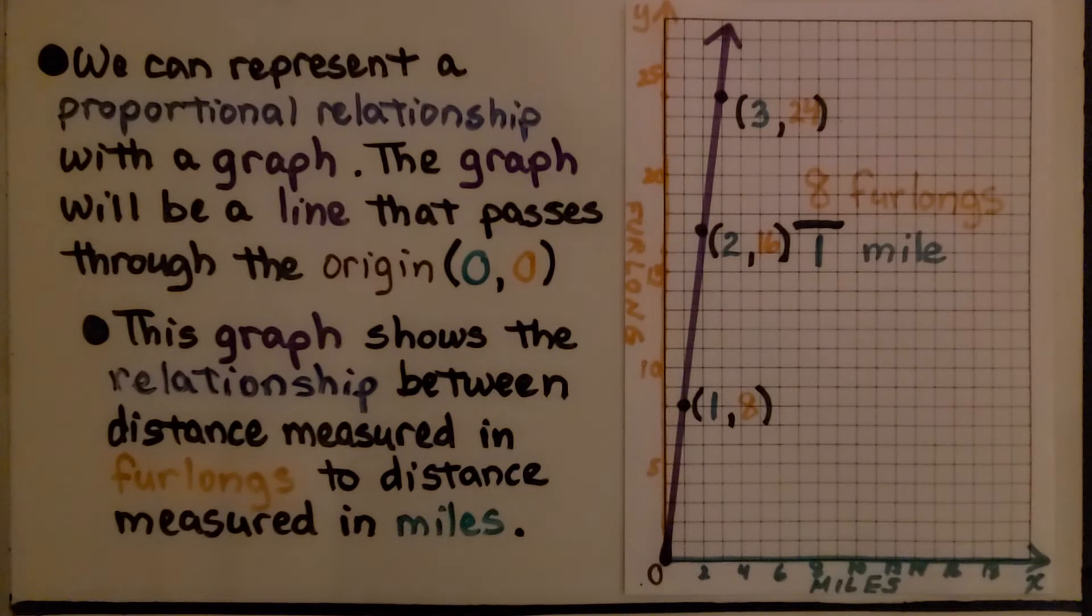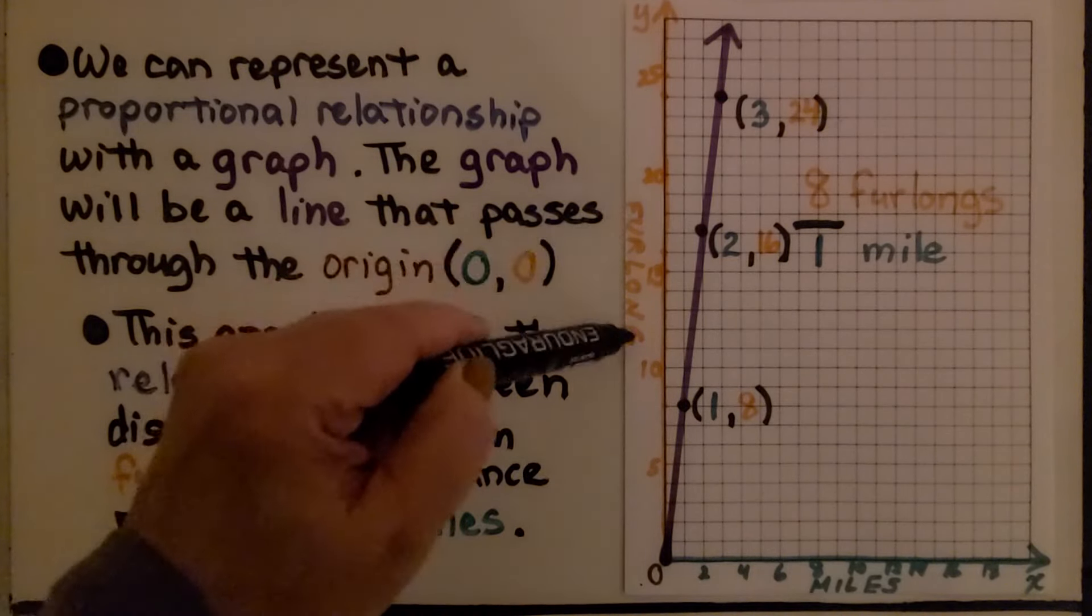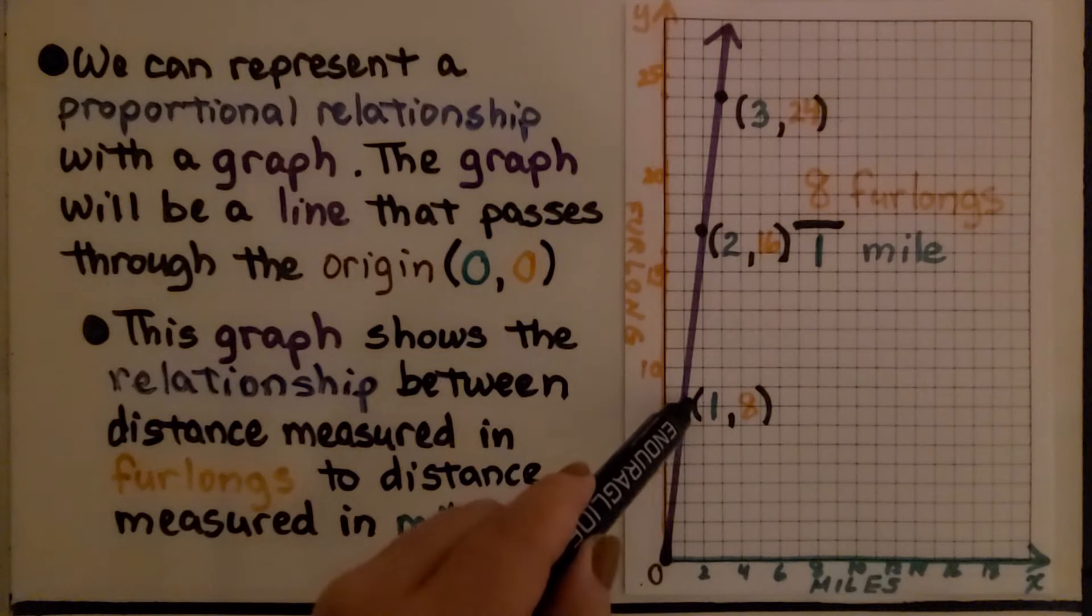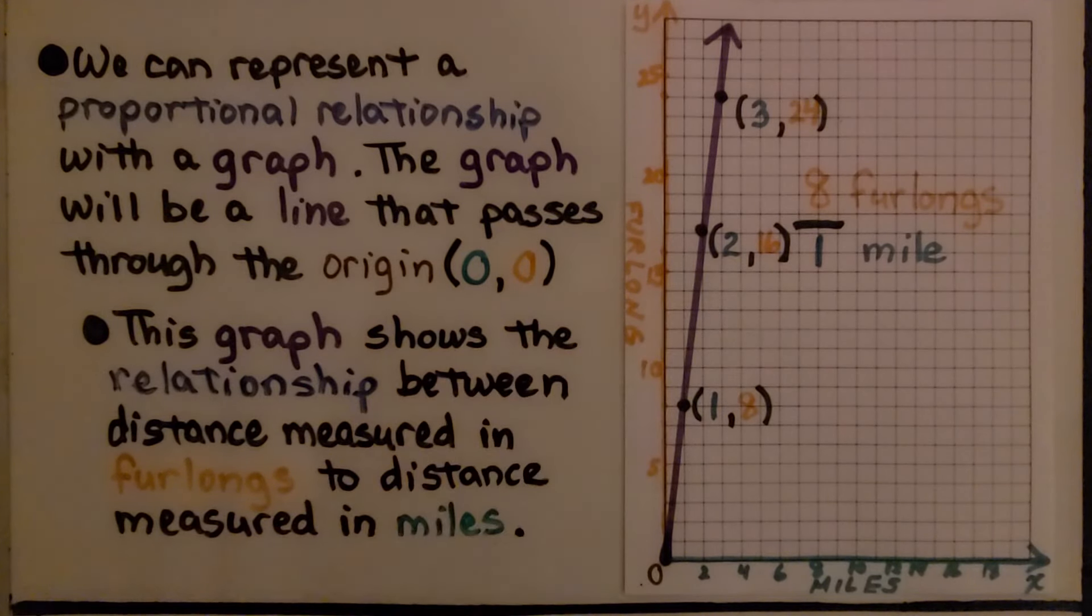This graph shows the relationship between distance measured in furlongs to distance measured in miles. So here we have miles, here we have furlongs. 1 mile is 8 furlongs. At (0,0) we have 0 miles and 0 furlongs.